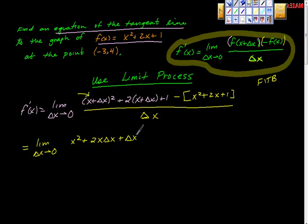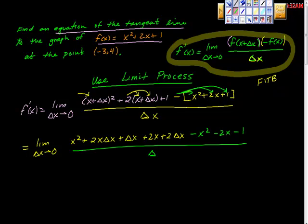That's this piece. Now I'm going to have to distribute this into here. So it's positive 2 times x, which is positive 2x. 2 times change of x is positive 2 changes of x. Now I'm going to distribute this negative sign into here, which gives me negative x squared, negative 2x, and negative 1 all over change of x.